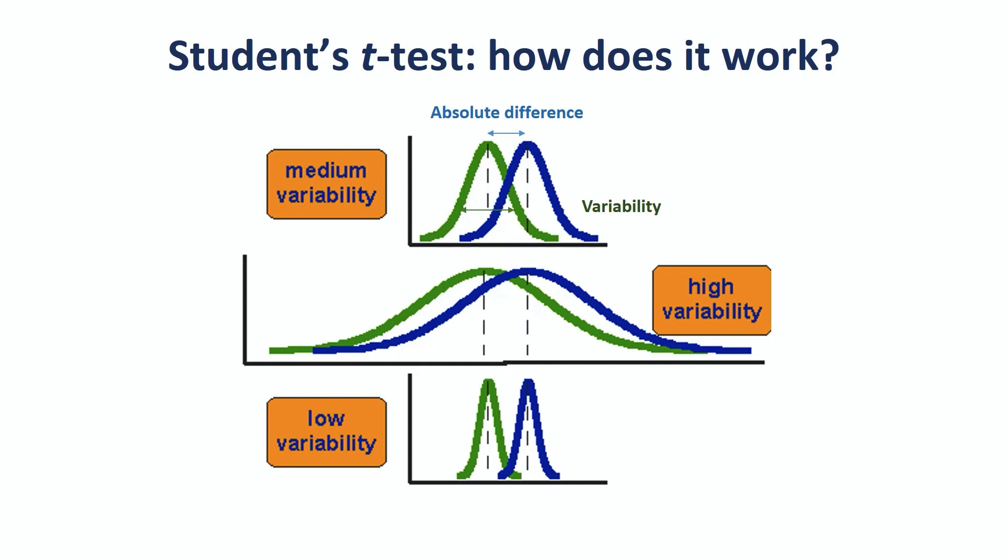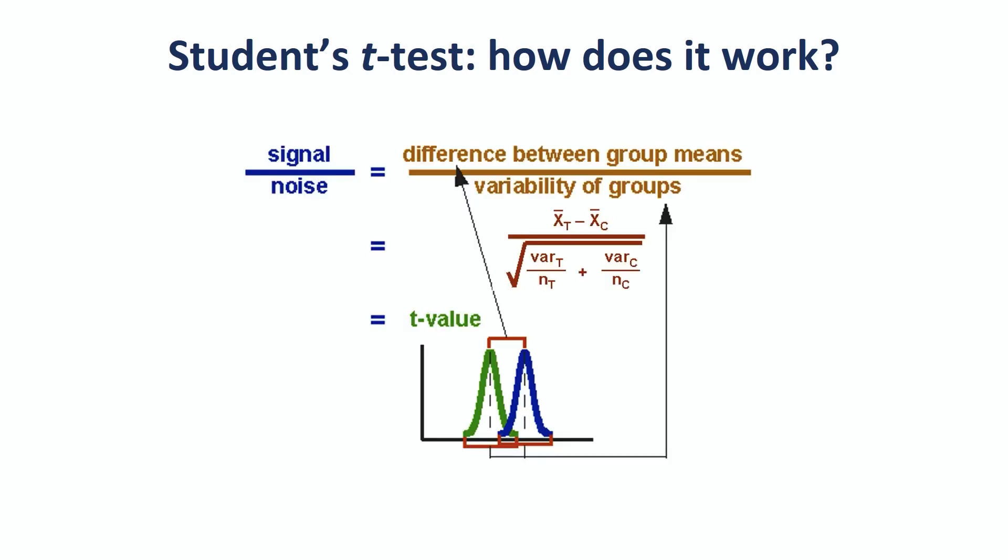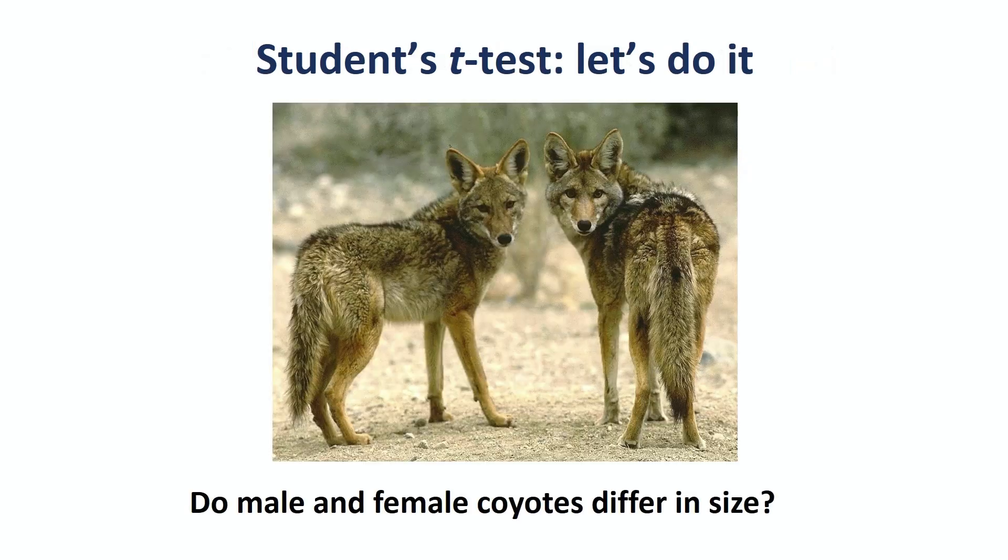Now, as I said, the t-test is exactly about that ratio between signal and noise. At the numerator, we have the absolute difference, and at the denominator, we have the variability. We get a statistic t, and the bigger it is, the smaller our p-value will be. Now, let's try an example. We are going to compare the body length of coyotes between sexes. And if you've watched the video on data exploration, which I really recommend you do, you know I like these guys.